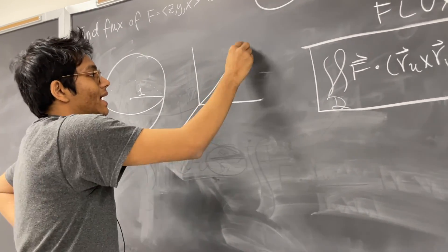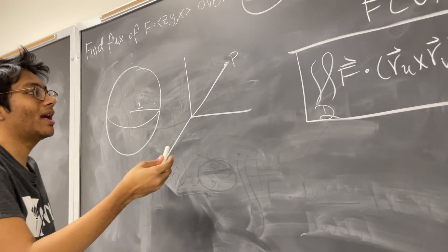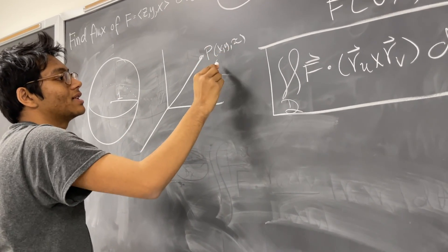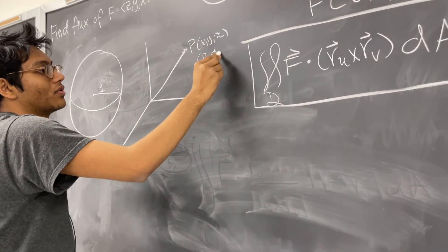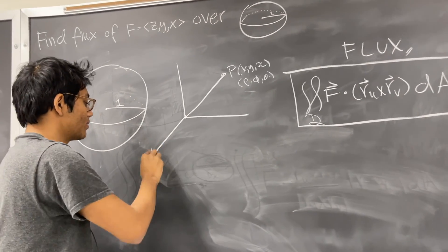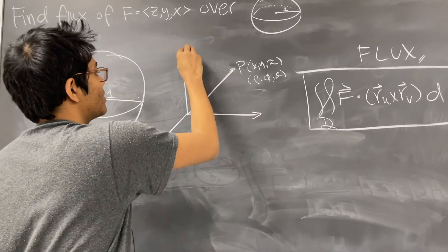So let's say I have some point P and I want to describe this point P not in terms of Cartesian coordinates but in terms of spherical coordinates. So here's my X, here's my Y, here's my Z.